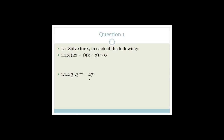Next question: 3 to the x times 3 to the x plus 1 equals 27 to the x. We should look for common bases. On the left, using the product rule with a common base of 3, we add exponents: this becomes 3 to the (x plus x plus 1), which is 3 to the (2x plus 1). Now we need the right-hand side to have the same base — we need the bases to match so we can cancel them.